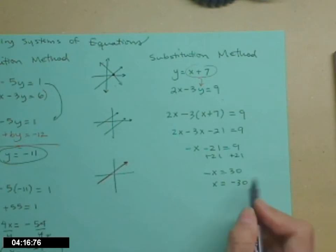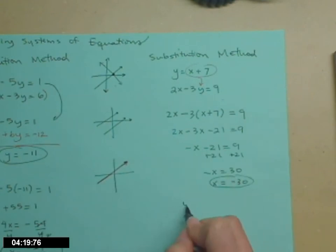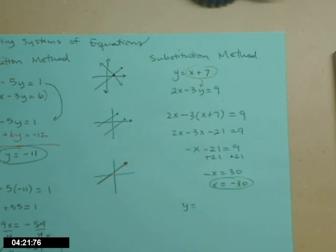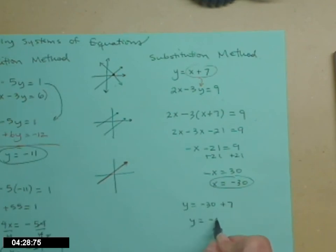And then again, I know what the x value is, I need to find the y partner, use one of the equations up here to figure it out. Y equals x, now being played by negative 30, plus 7. Y equals negative 23.